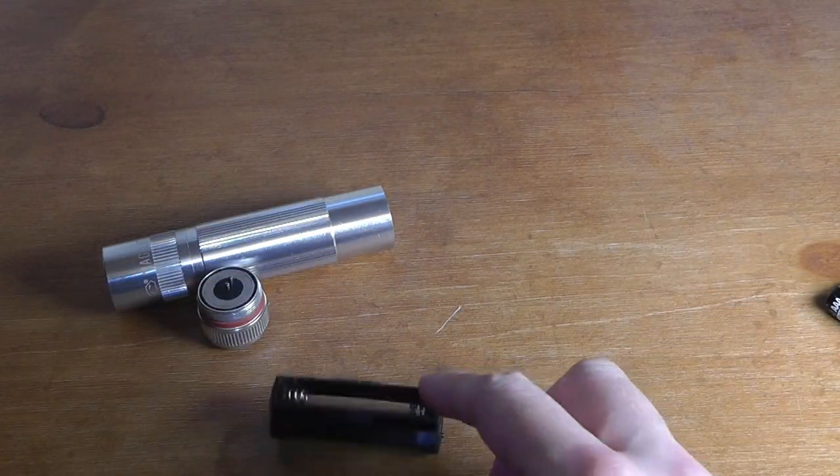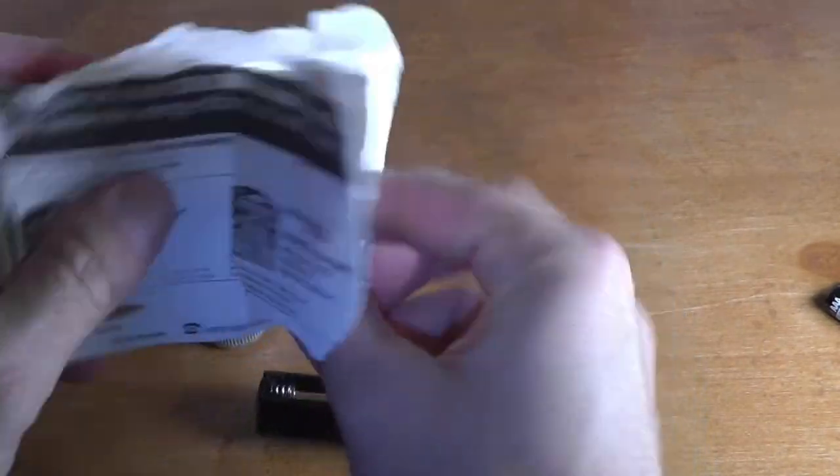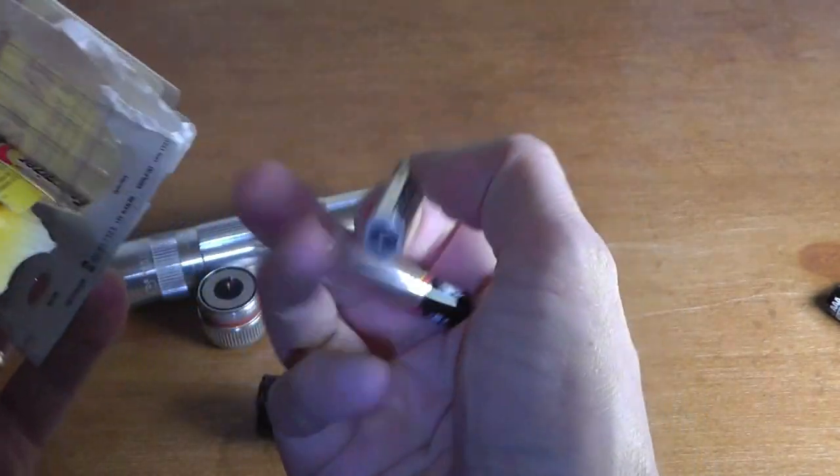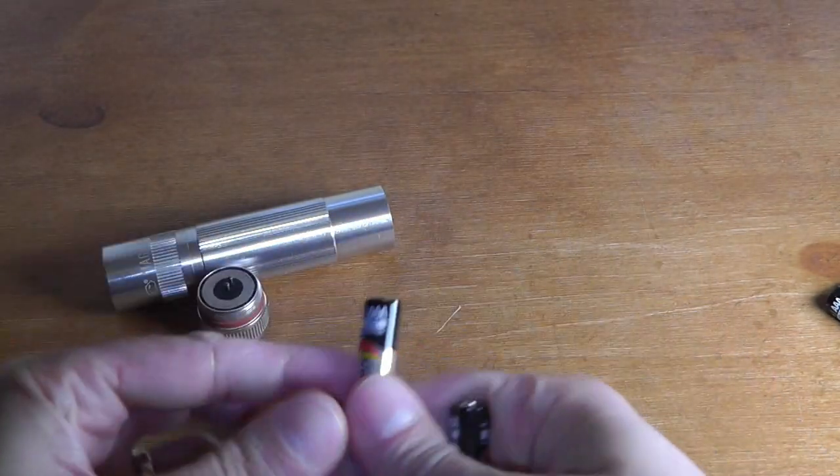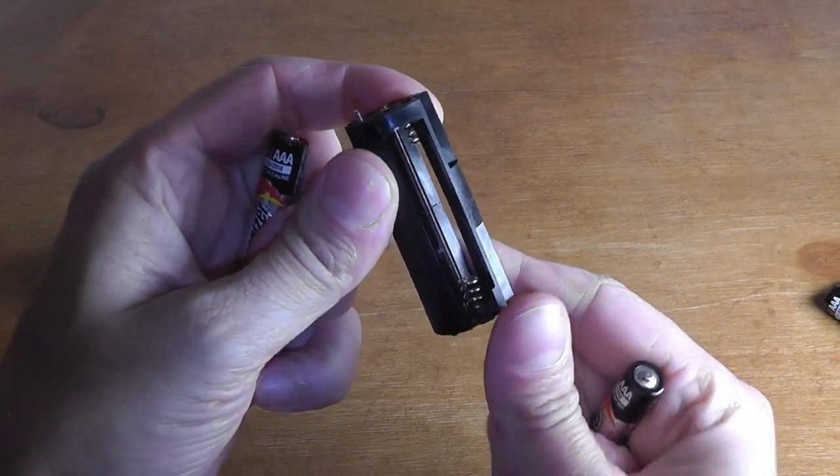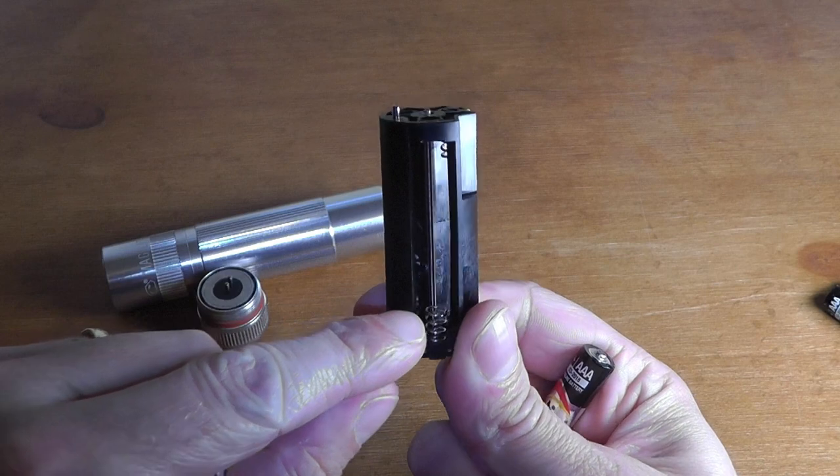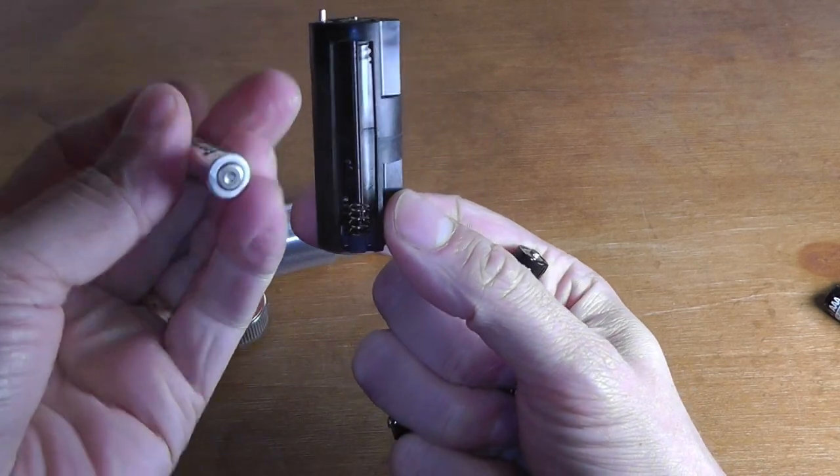When I put the new batteries back in, I make sure I put them in the right orientation. So the battery has the plus side and then the negative side. The negative side, that's where the spring is.